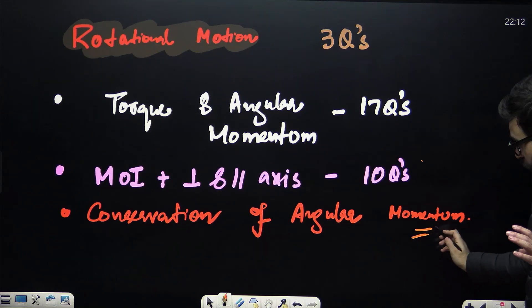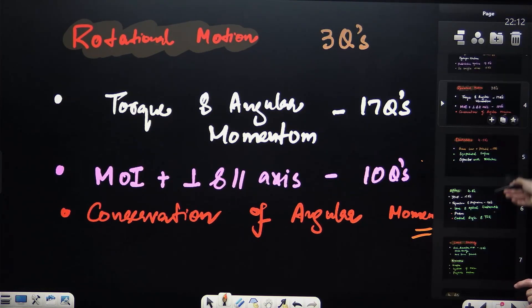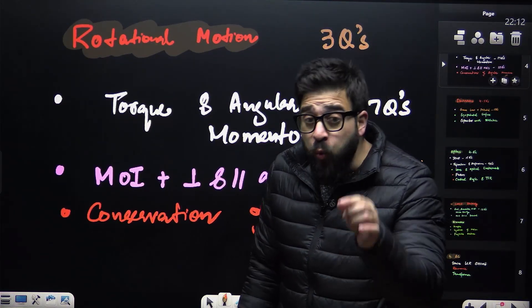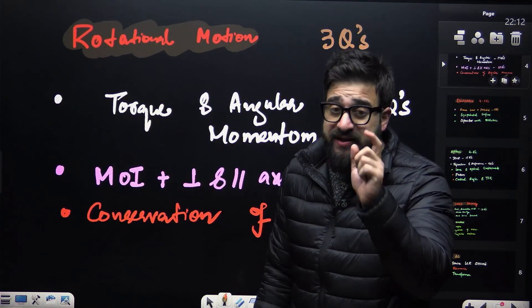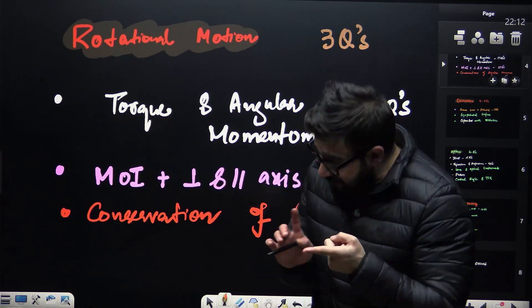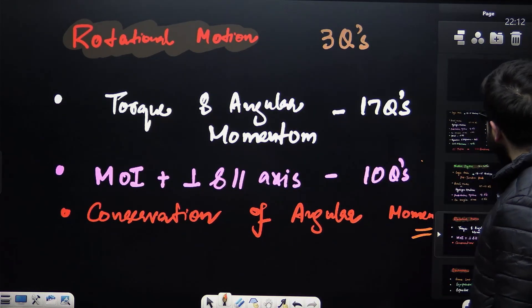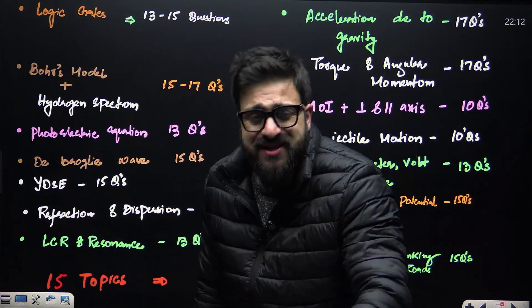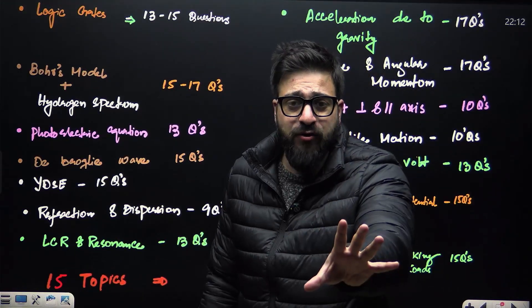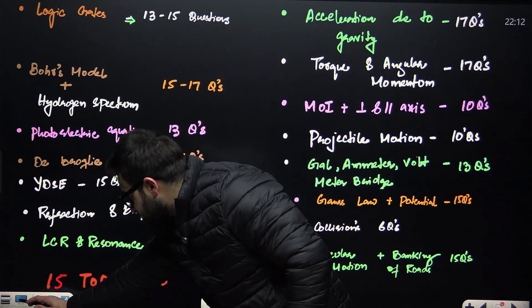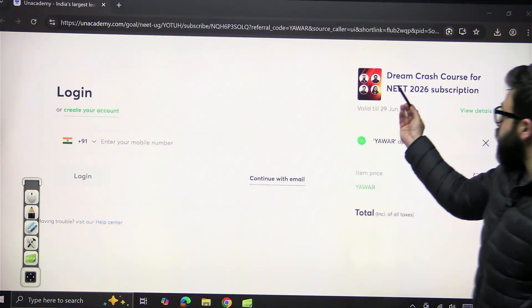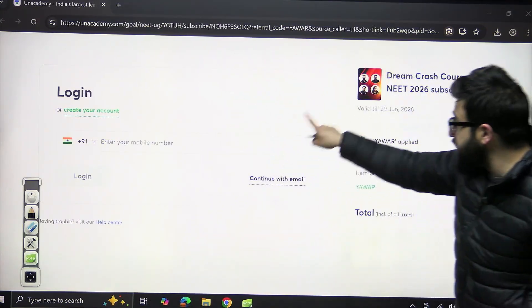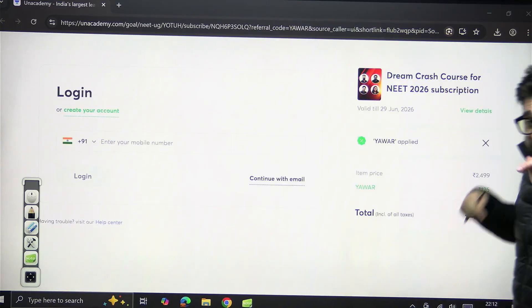Now, now, now, before moving further, my dear NEET aspirants, we have recently launched a Dream Crash Course batch, okay. And let me just tell you, I will be starting from these topics only in the Dream Crash Course so that you can score maximum, so that you can save yourself. Okay, at least you get this safe score in physics. So that is the Dream Crash Course batch. The link is in the description below because we are starting the classes from 2nd January. So if you have not joined this, join this as soon as possible because link is in the description and in the comments also.